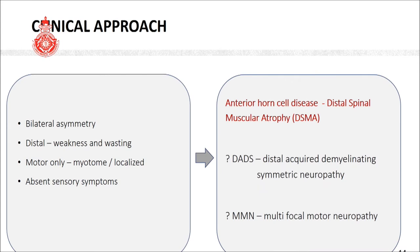There are a number of anterior horn cell pathologies, like motor neuron disease and others, but in this particular condition it is distal spinal muscular atrophy involving distal muscle groups in young adults, with asymmetric involvement mainly in the hands. There are a few other rare conditions like distal acquired demyelinating symmetric neuropathy and multifocal motor neuropathy which can give a similar picture, but these are very rare specialized conditions more relevant for neurology trainees and registrars.